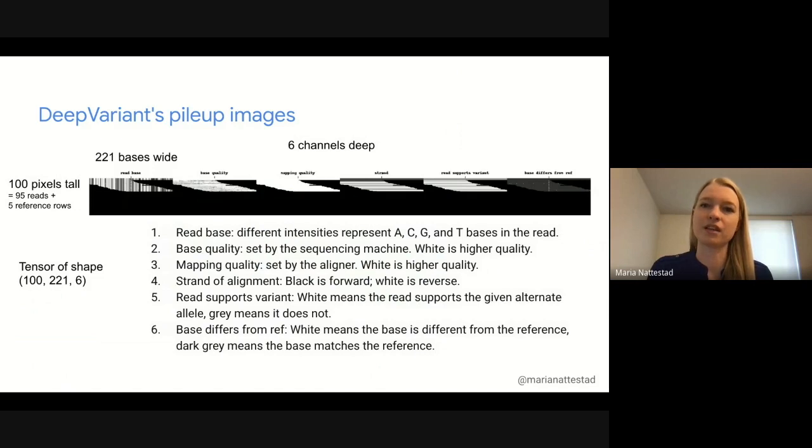People commonly think that DeepVariant is using regular RGB images. But that, in fact, hasn't been true since the open source version came out in 2017. It has been these six channels, and there even used to be a seventh, but it was removed very early on. These six channels include the read base ATCG of the reads, the base quality which comes from the sequencer, the mapping quality that comes from the aligner and is the same across the whole read.